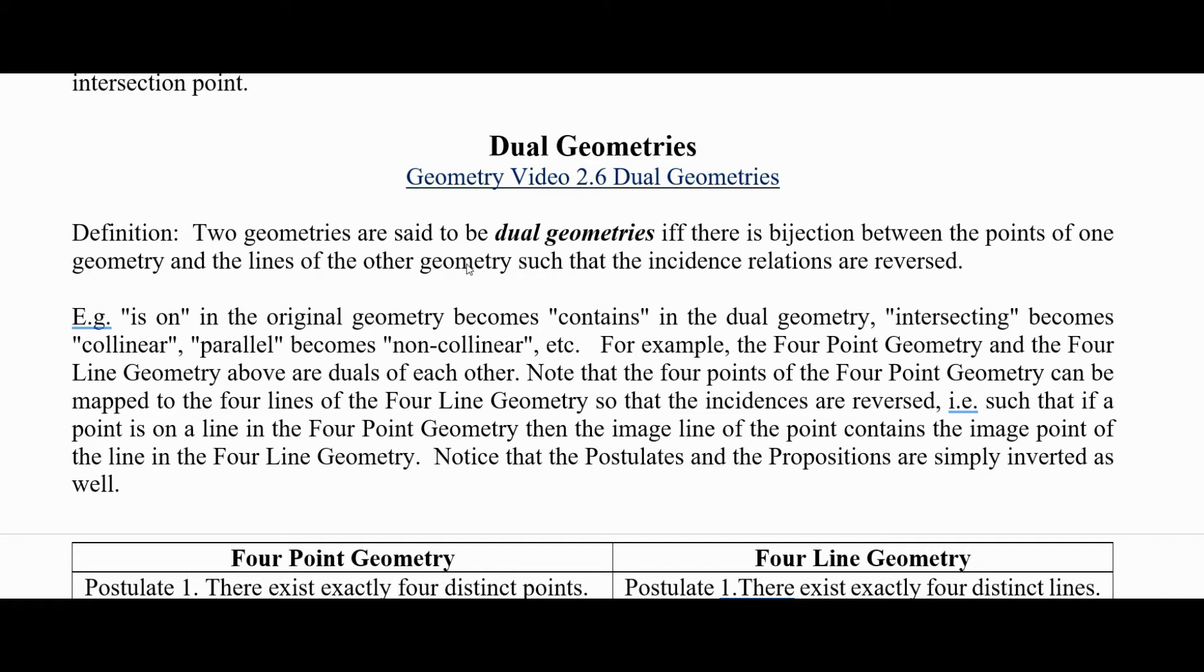Is on in the original geometry becomes contains in the dual geometry. Intersecting in the first one becomes collinear in the second geometry. Parallel in one geometry becomes non-collinear and so forth.